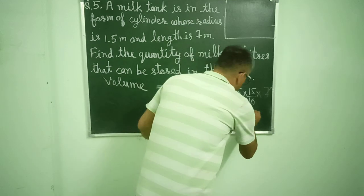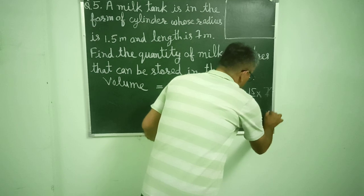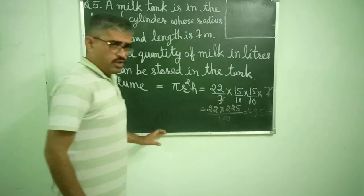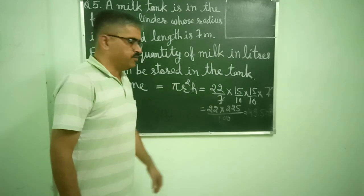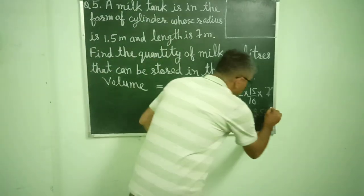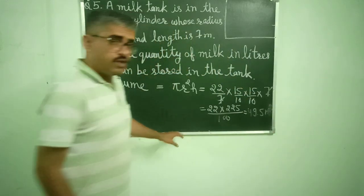That will be 49.5 meter square. So the volume of this cylinder is 49.5 meter cube.